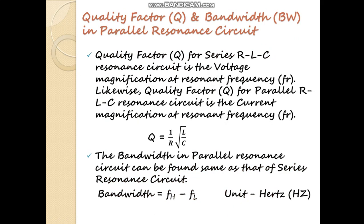Now we will see the quality factor and bandwidth in the parallel resonance circuit. We discussed these in the previous video on series resonance. The quality factor Q for the series RLC resonance circuit was the voltage magnification at resonant frequency. Likewise, the quality factor Q for the parallel RLC resonance circuit is the current magnification at the resonant frequency. The formula is the same as that of the series resonance circuit: Q equals 1 upon R times the square root of L by C. The bandwidth for the parallel resonance circuit is likewise BW equals FH minus FL, and its unit is Hertz.